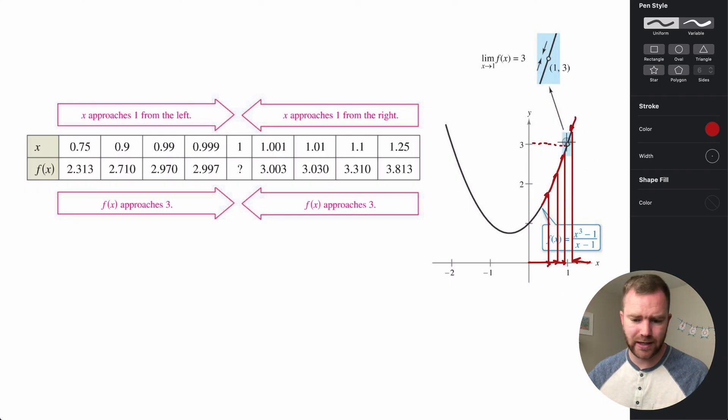So even though our function is not actually defined at x equals 1, we can see that the y values are coming closer and closer to 3. You would say that the limit of f(x) as x approaches 1 is 3. This is approaching 3 - it's not equal to 3, but it's approaching 3 from either side. And this is the main idea of a limit.